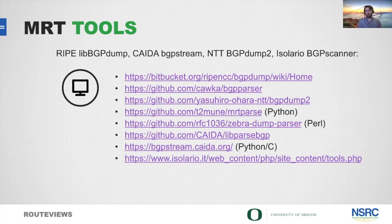MRT files are bzipped and synced back to our archival host at archive.routeviews.org, accessible via HTTP, FTP, and rsync. There are a number of different tools able to read MRT data in various programming languages. The two I'd like to highlight are CAIDA's libparsebgp and their BGP Stream tool — we'll actually give you a demonstration of those tools after this presentation.